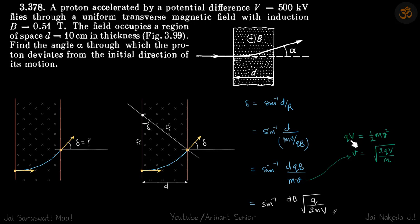So qV is equal to the energy given to the proton is equal to half mv square. This will give the velocity. We will put that here and get our answer.